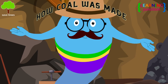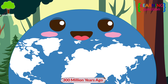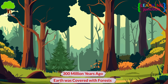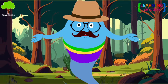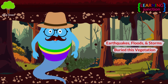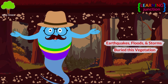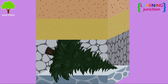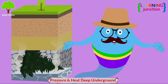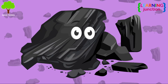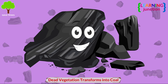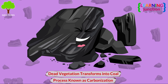I will show you how coal was made. Around 300 million years ago, the earth was covered with vast and dense forests. Natural events like earthquakes, floods, and storms buried this vegetation under massive layers of soil and sediment. The buried plant matter was compressed and exposed to increasing pressure and heat deep underground. Under these intense conditions, the dead vegetation slowly transforms into coal, a process known as carbonization.